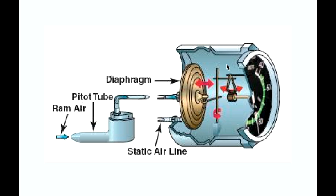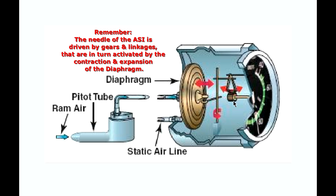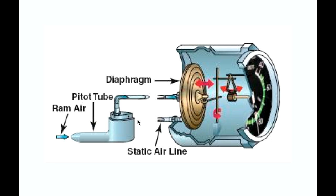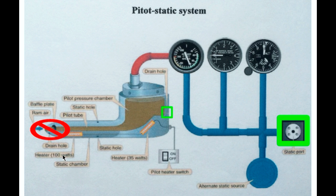In that case, we have the same pressure inside the diaphragm as inside the instrument case. Since there is no significant pressure difference — the same pressure on both sides — the diaphragm is neither expanding nor contracting. The result is a zero-knot reading on the airspeed indicator. The needle will basically go all the way to zero, as there is nothing driving it.